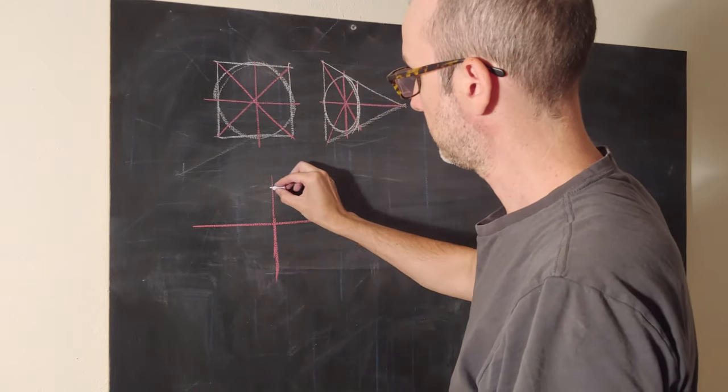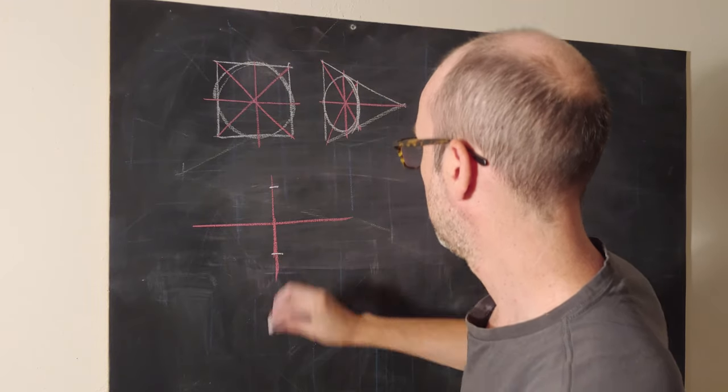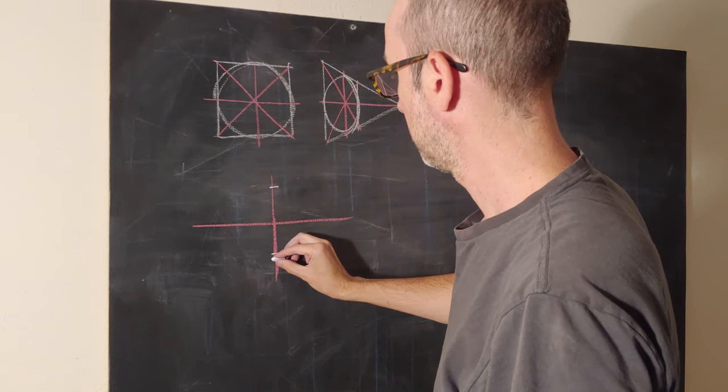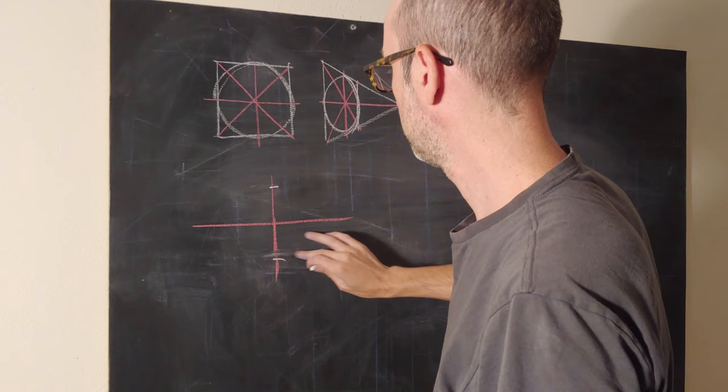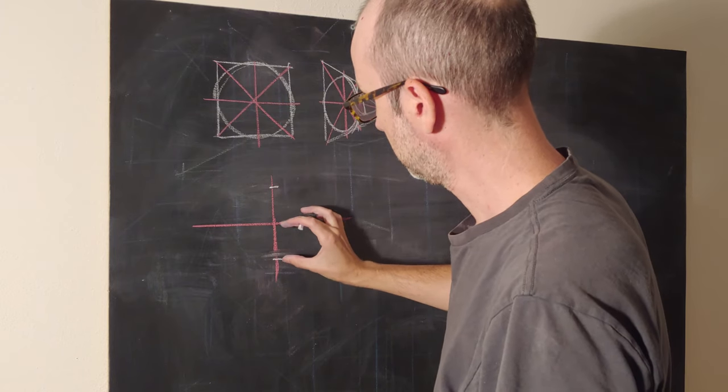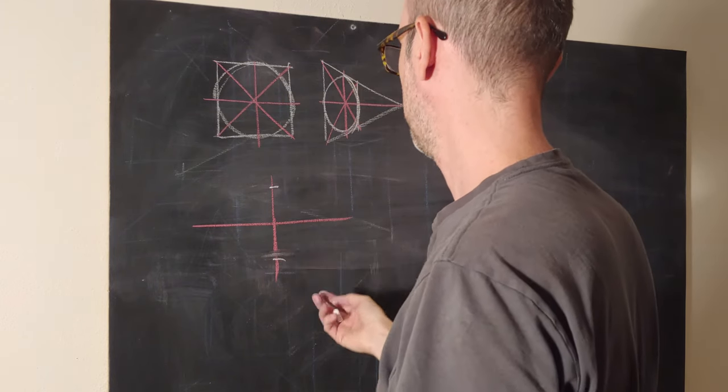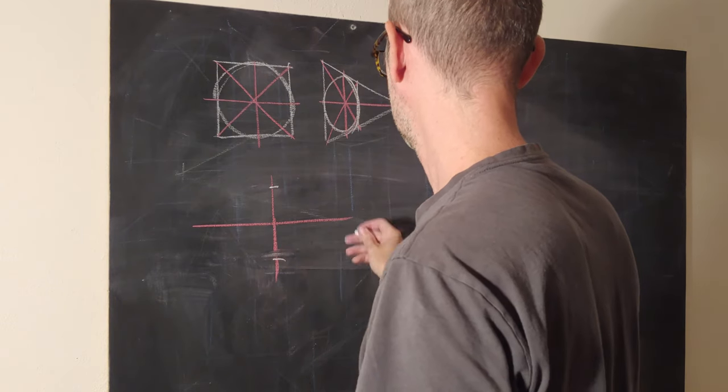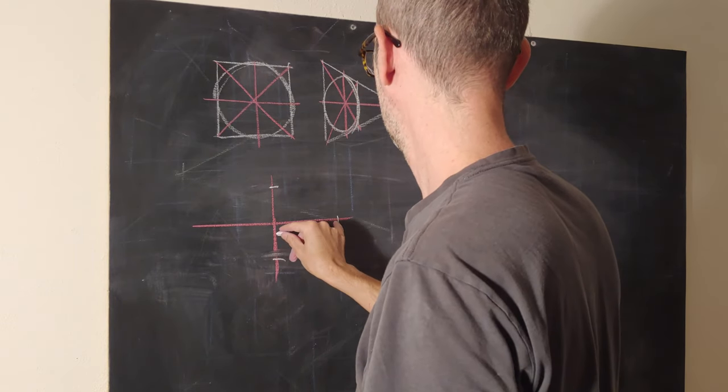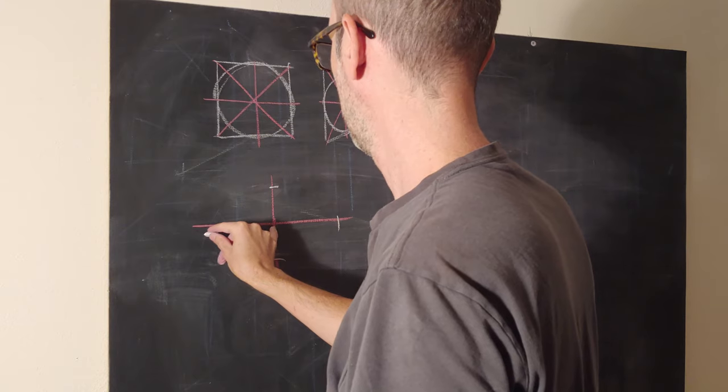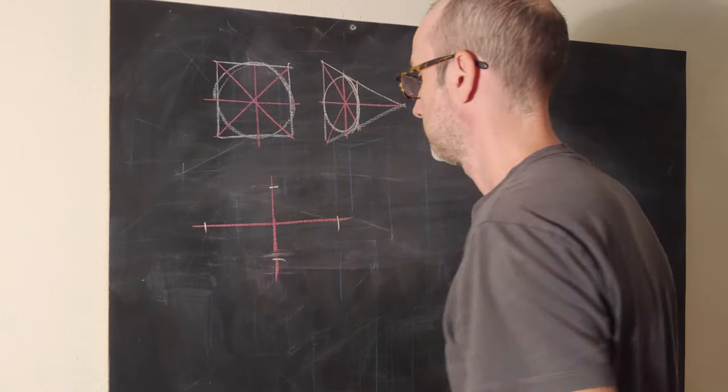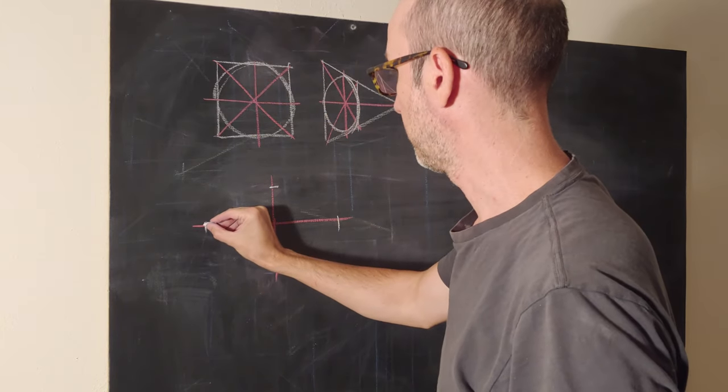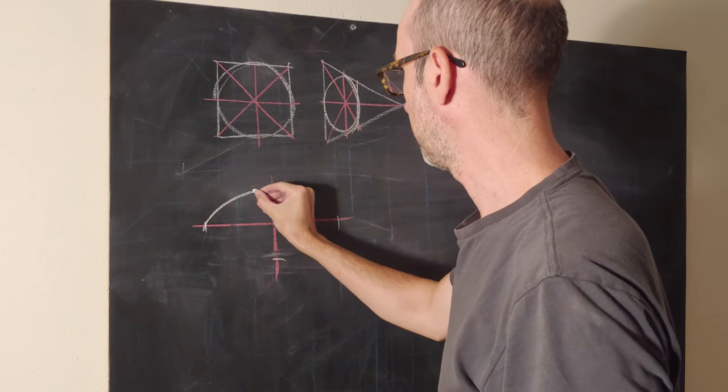An ellipse is perfectly symmetrical in all four quadrants. You take this distance and this distance and they should be the same. We can take this distance, go a little bit bigger here, and it should be the same. Each quadrant should be perfectly symmetrical when we draw out our ellipse.